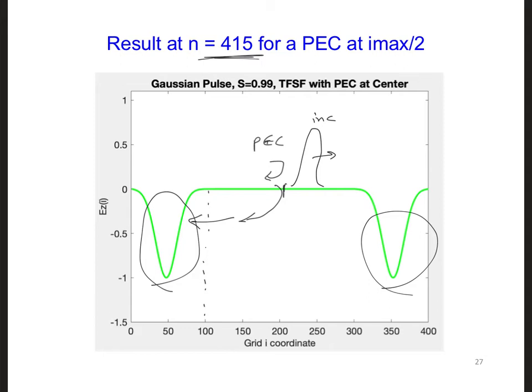So it turns out that there is a non-physical numerical scattered wave of opposite sign propagating in this region that exactly cancels the incident wave. So it has an amplitude of minus 1.